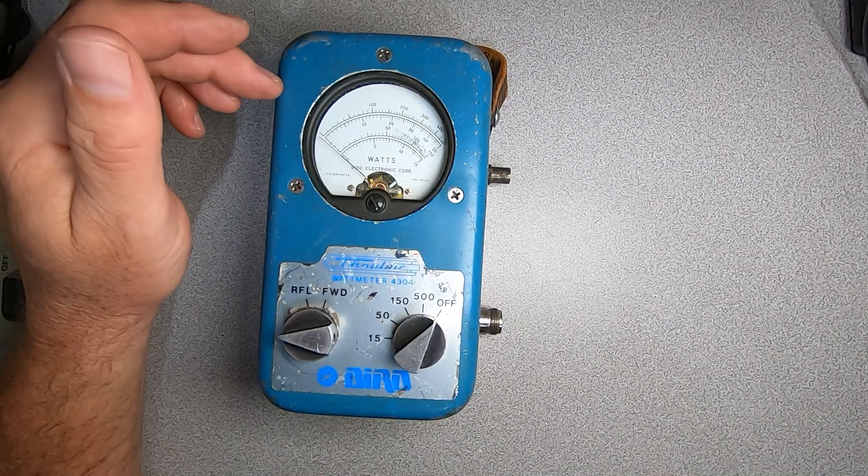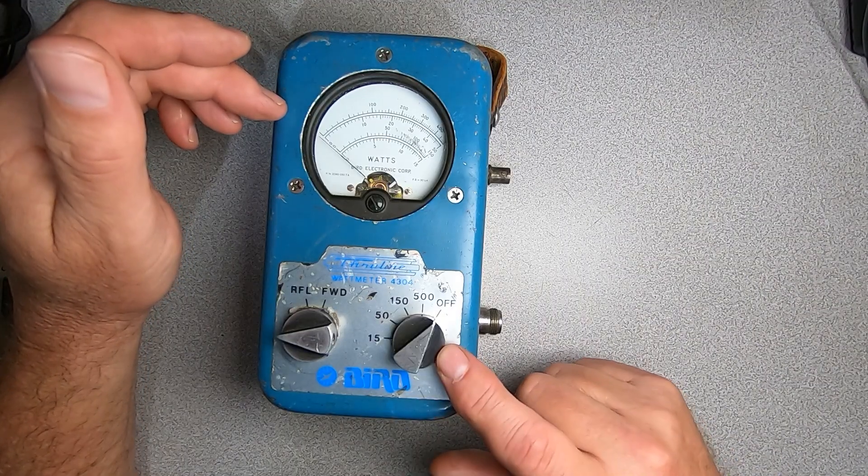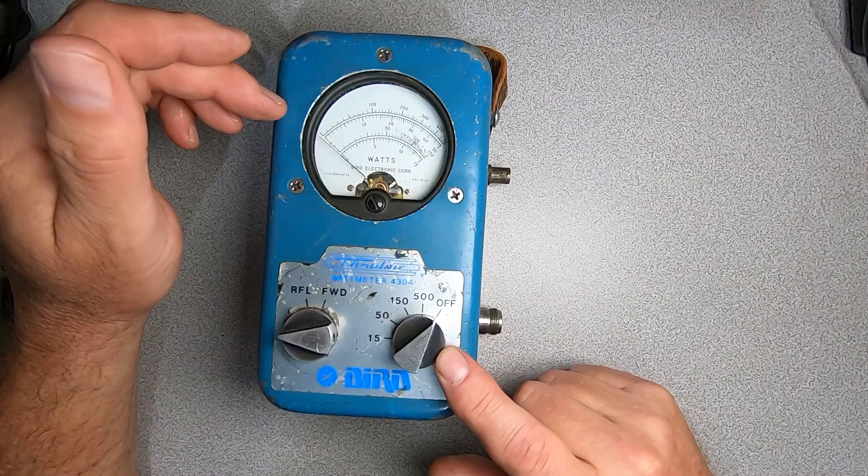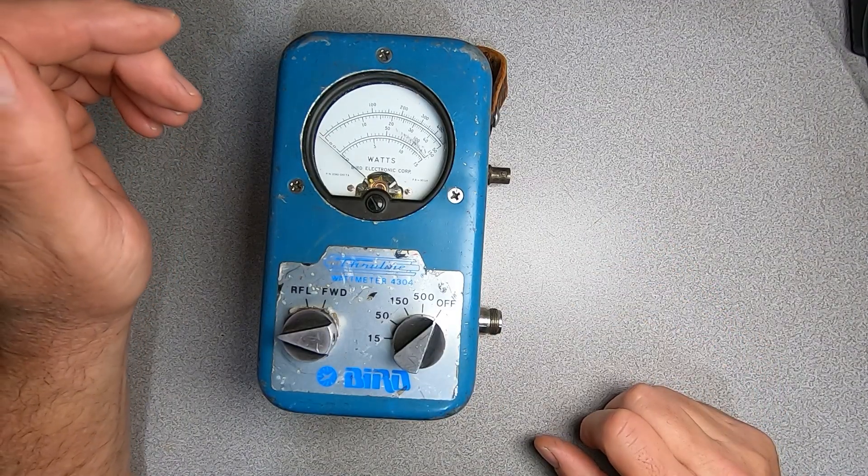This meter differs from the 43 in that it does not use slugs, rather uses a switchable circuit to provide a measured power range of 15 to 500 watts over a frequency range of 25 megahertz to 1 gigahertz.